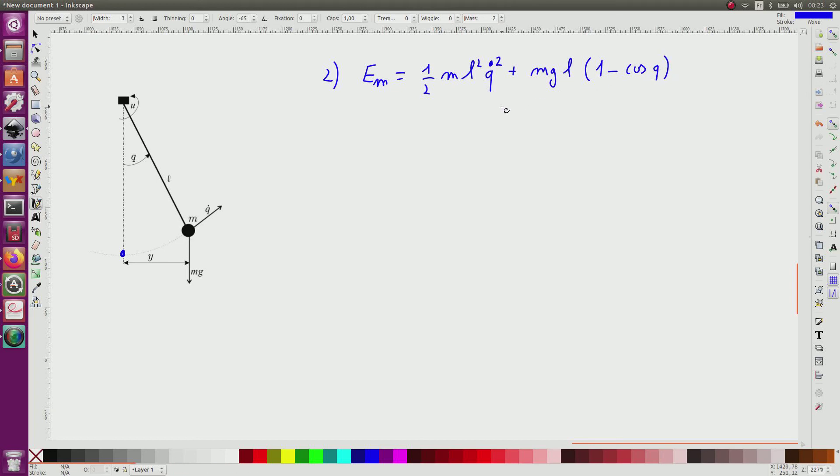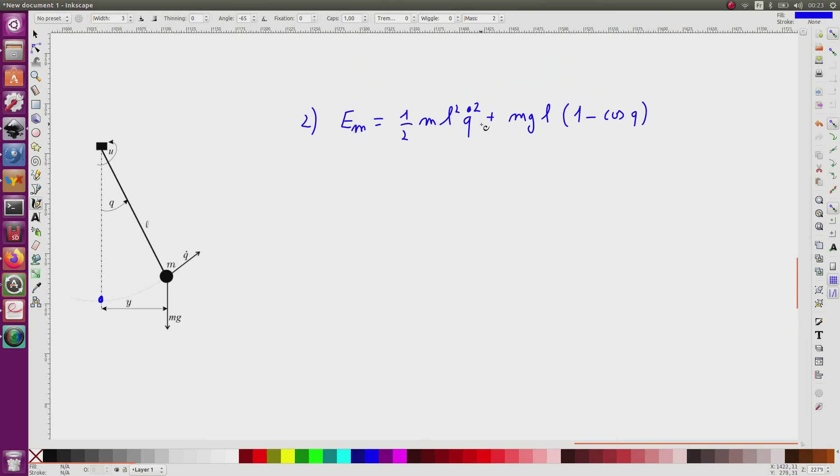And now I can take my state equation since I have an expression of Q dot, and I will know that, so first I will compute the derivative to show that the mechanical energy is constant. So here I will get half of ML squared, so this one will correspond to 2Q dot Q dot dot, plus, and this one will correspond to MgL Q dot sine of Q.